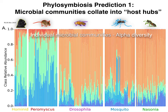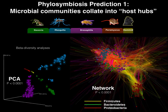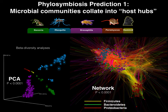Looking at total microbial diversity, the relative size of the bar indicates abundance and the color indicates the type of bacteria. When doing a principal component analysis of each of these microbiota, they cluster strongly together. In a network analysis looking for key taxonomic differences between communities, we again find clustering. In both analyses, mammalian lineages cluster together due to Firmicutes and Bacteroidetes, whereas insects cluster together due to proteobacteria.